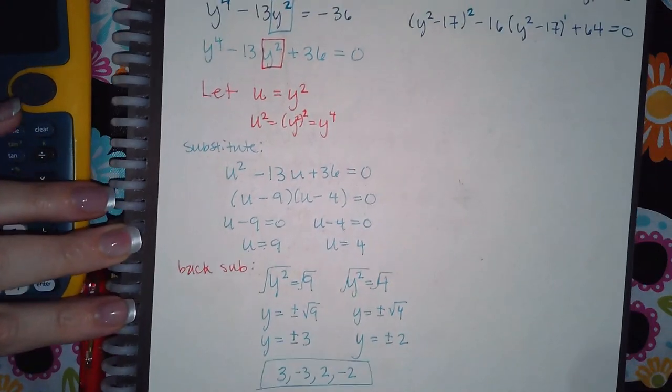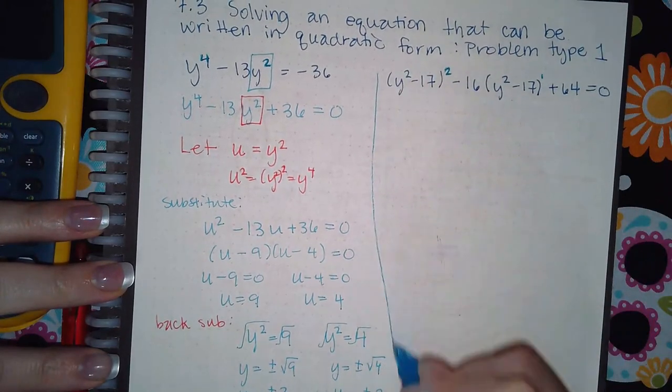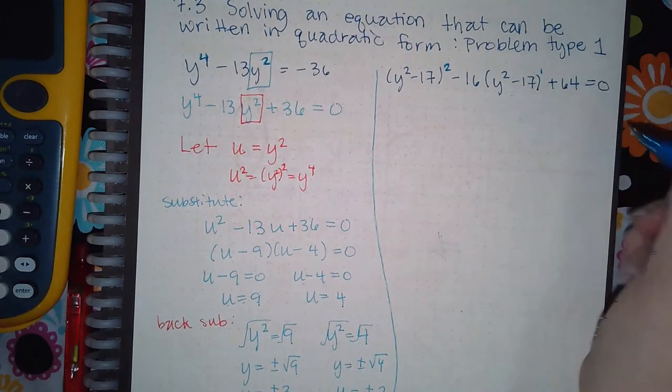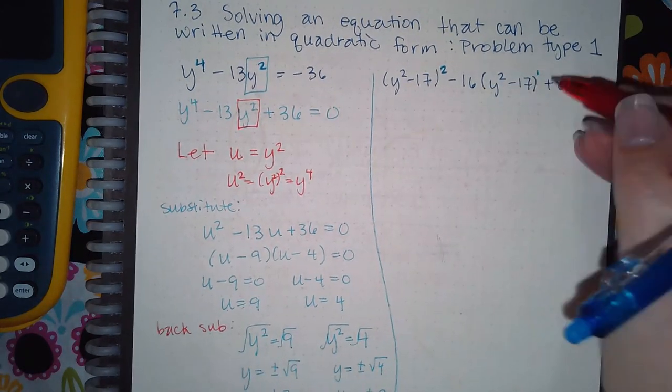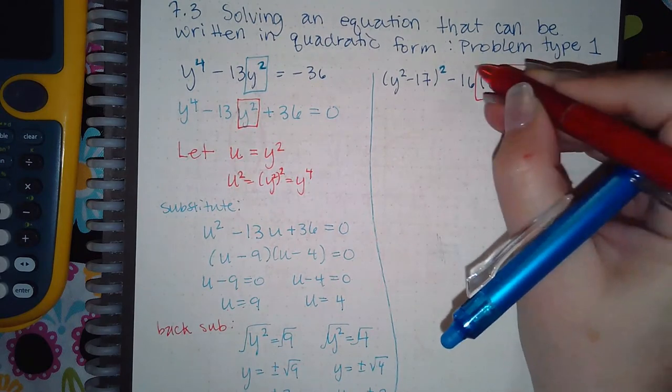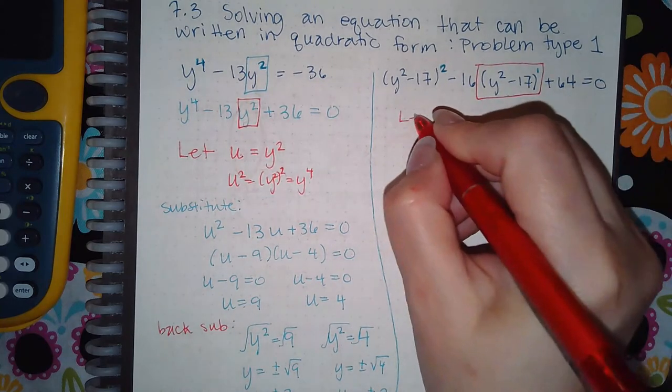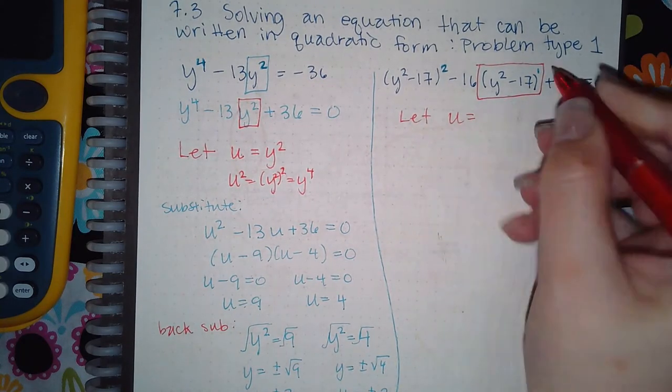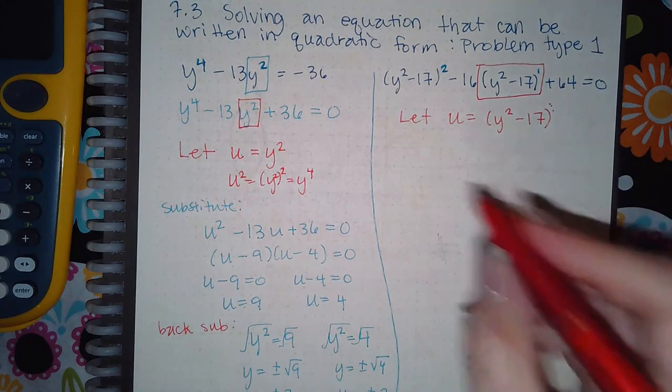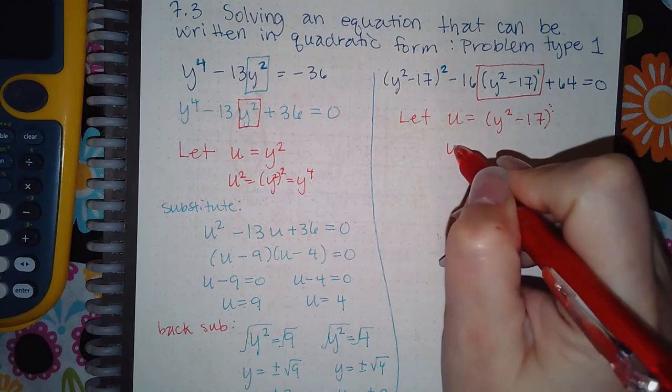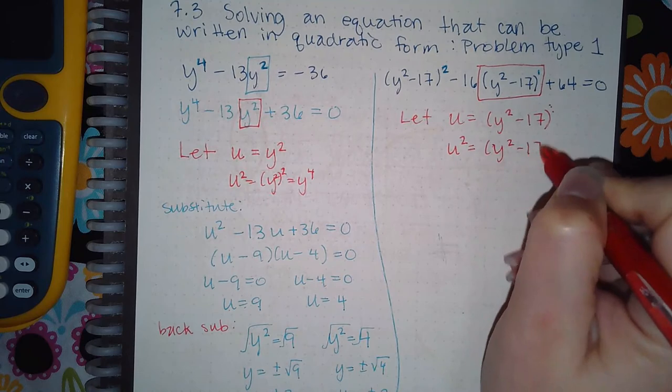Now, similarly, you can do that for the next example. However, your middle expression, it is already equal to 0. This is the coefficient of the middle term. Which means this thing is your middle expression. So you're going to say let u equal that entire middle expression. And you can put the 1 or not. It's up to you. And if I square this side, I get u squared. If I square this side, I get this expression.